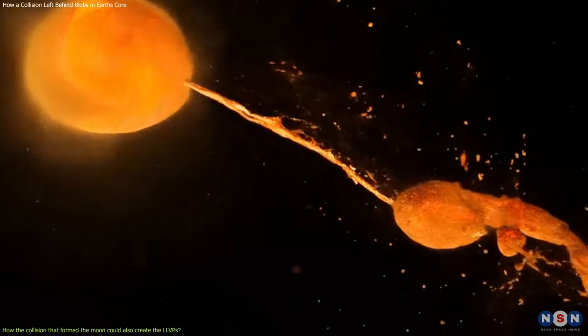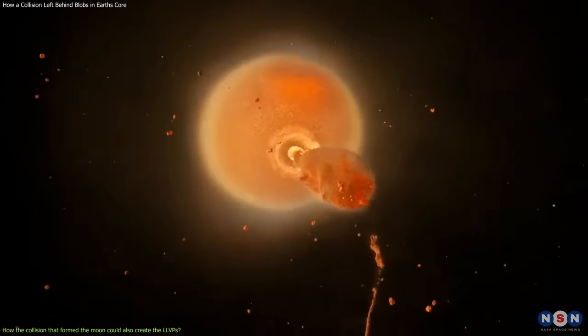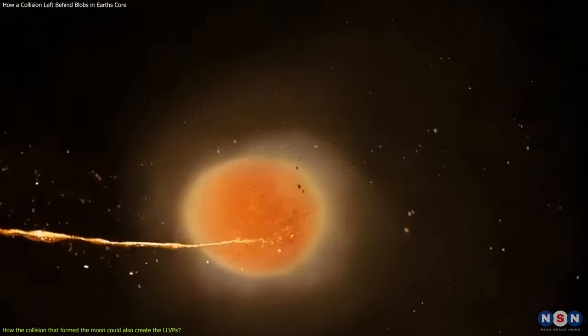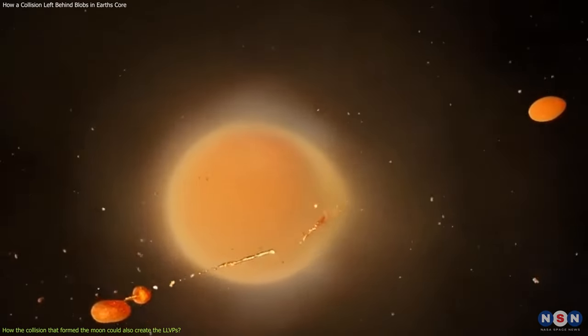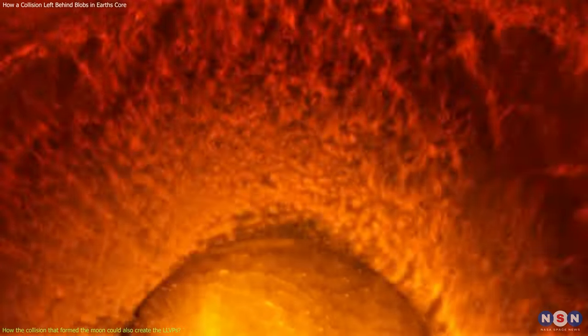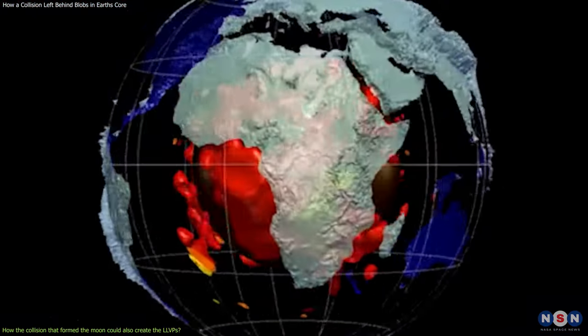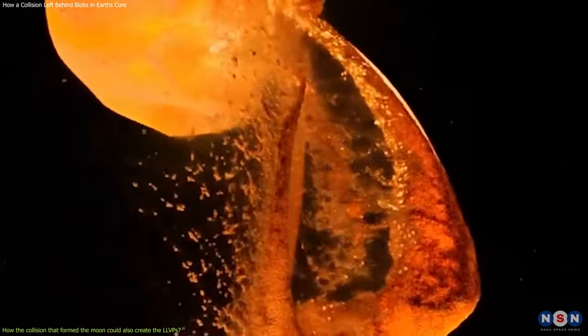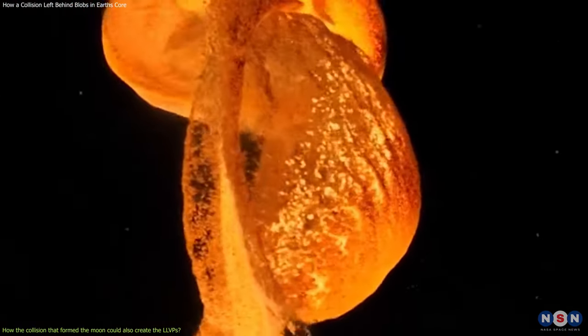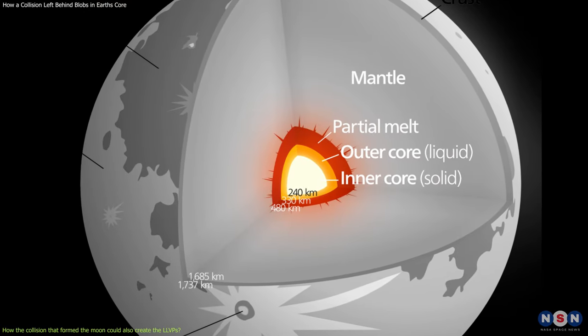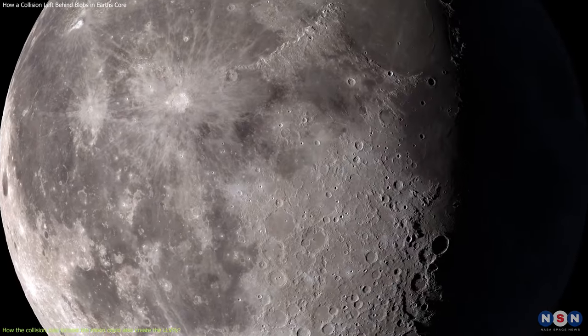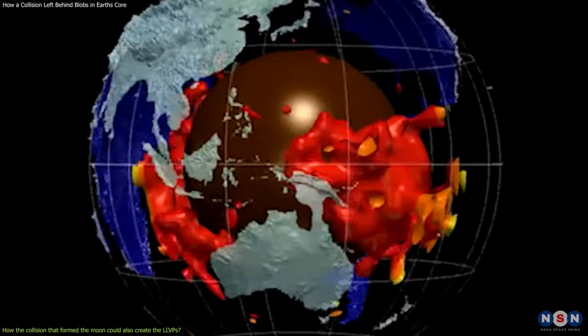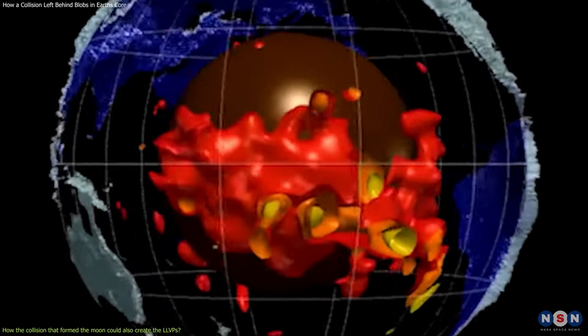Some of this material eventually joined the Moon, while some of it fell back to Earth and penetrated the mantle. The theory suggests that the material that fell back to Earth was denser and more metallic than the mantle, and that it sank to the bottom and formed the LLVPs. It also suggests that the material that joined the Moon was lighter and more silicate-rich than the mantle, and that it formed the Moon's crust and mantle. This explains why the Moon has a different composition and density than the Earth, and why the LLVPs have a different composition and density than the rest of the mantle.